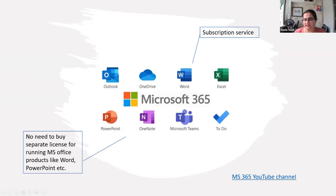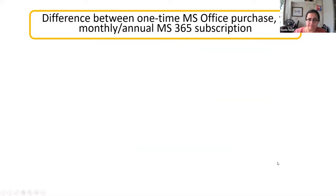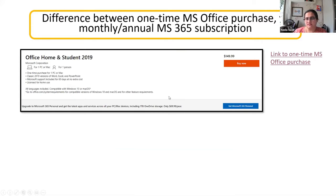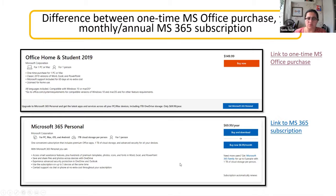There's also a Microsoft 365 YouTube channel with many good videos on the whole package. The key difference between purchasing Microsoft Office and subscribing to Microsoft 365 is that a subscription gives you not only Word, Excel, and regular offline apps, but also online support and many collaborative applications. These subscriptions come in different tiers — the more expensive, the more support systems you get.